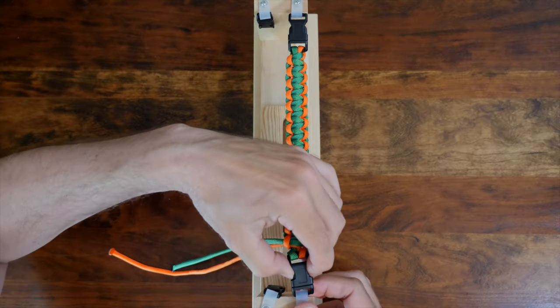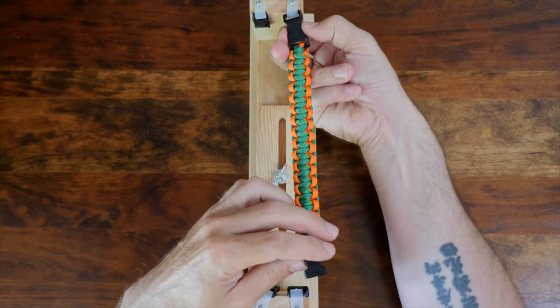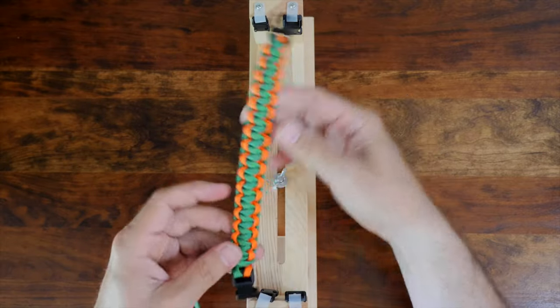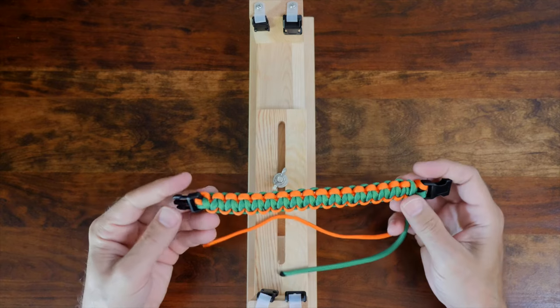I'm now going to remove the bracelet from the jig and show you what we have so far. As you can see, the bracelet is almost finished. Let's trim away these tail ends.